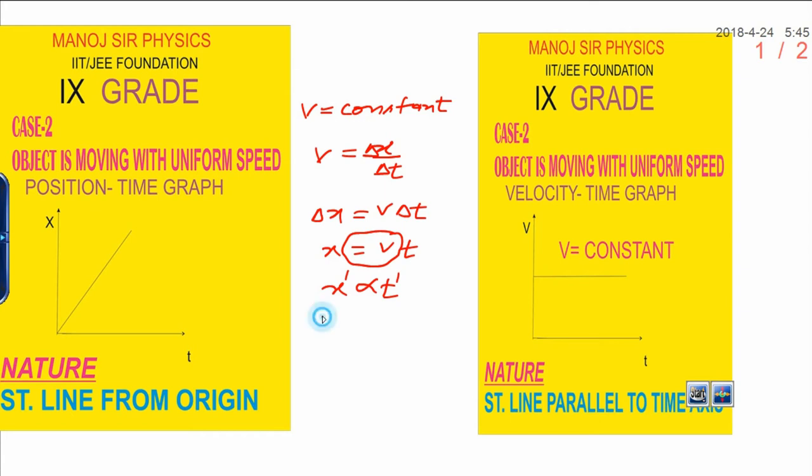But from where are you getting the straight line? Put t equals 0. It means you will get x equals 0. It means the straight line starts from the origin. This is the origin. Because in the origin, both variables have zero value. This is the straight line from the origin.